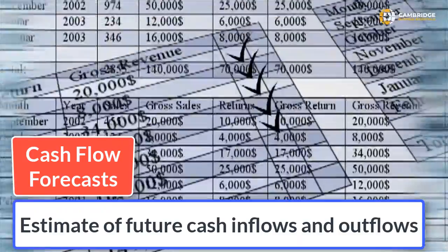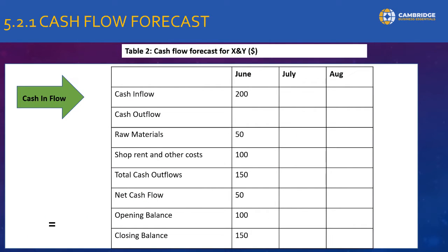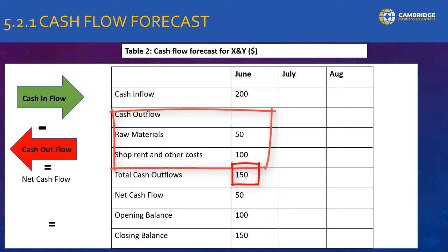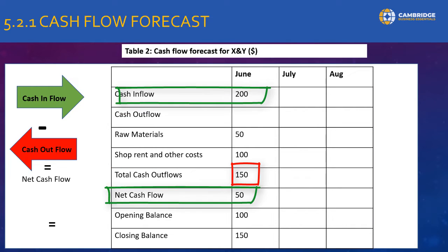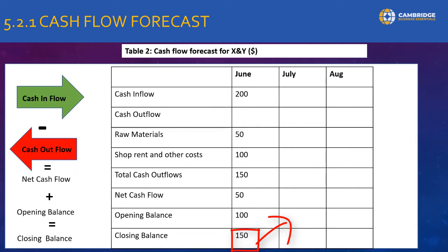Cash flow forecasts can look complicated with lots of numbers and columns, but once you understand how it works it's straightforward and logical. I've used the cash flow forecast model from Cambridge IGCSE exams. At the top we have cash inflow — usually from sales, in this case $200. We then calculate the total cash outflow by adding up all outflows: raw materials and rent, giving a total of $150. Subtracting cash outflows from inflows gives a net cash flow of $50. We then add the net cash flow to the opening balance to get the closing balance of $150. The closing balance for one month becomes the opening balance for the next — so $150 in June becomes the opening balance in July, and so on.